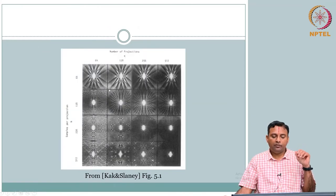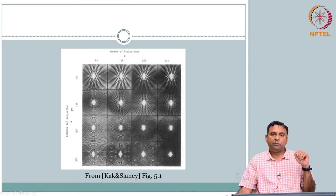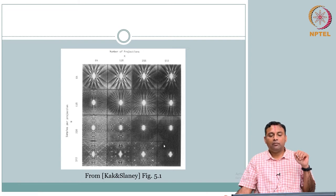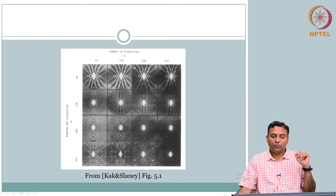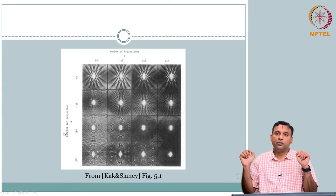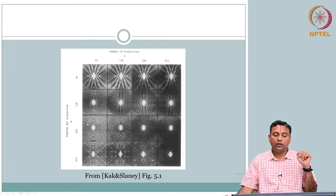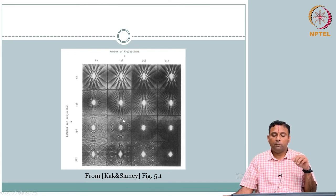Here is an example showing variation in number of projection angles and samples per projection. Even with some measurements you see the central object, but you notice a star artifact — the streak artifact from under-sampling. Under-sampling can occur in the number of views or in the number of detector elements per view. Either case has its own effect and you see aliasing. This is the streak artifact.